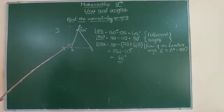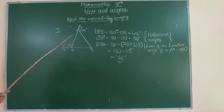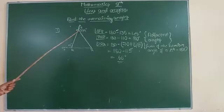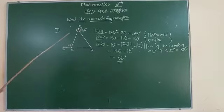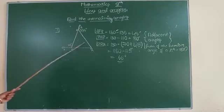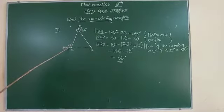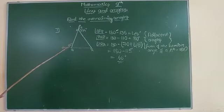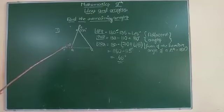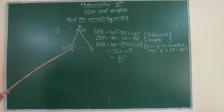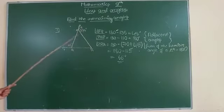The exterior angle is equal to the sum of the two interior angles — angle RPQ and angle PRQ. When we add these two angles we get the exterior angle of 110 degrees. Similarly, when we add angle PQR and angle QRP we get the corresponding exterior angle. On the basis of this we can find the remaining angles.